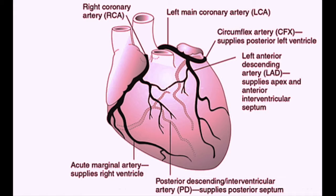The left main coronary artery courses away from the aorta and takes off from the left coronary cusp. The left main coronary artery is usually a short, wide artery that gives rise to two arteries in most patients. The first branch is the left anterior descending artery. The LAD, or left anterior descending, supplies the apex and the anterior interventricular septum, and travels in the interventricular groove on the anterior portion of the heart.